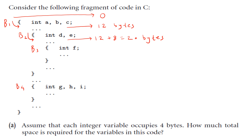Then when you enter into block three, you realize that block three is also defined in block two. So the memory allocated at this point in time is the previous memory allocated plus the memory required for f, which happens to be 24 bytes.